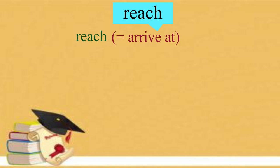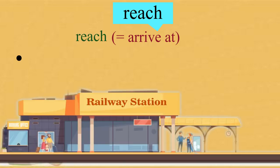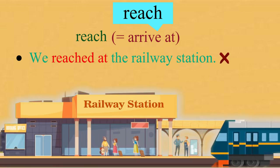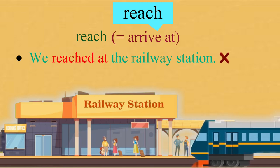So, when we use the word reach in a sentence, we do not need to use at. For example, We reached at the railway station is incorrect. Repeat the correct sentence now.